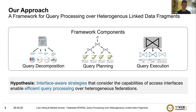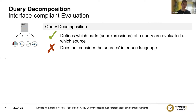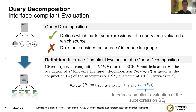Starting with query decomposition: it defines which sub-expressions of a query should be evaluated at which source. Since traditional approaches consider all interfaces to be equal SPARQL endpoints, they do not consider the source's interface language, and some sub-expressions may not be evaluatable at all sources. Therefore, we extend the definition and introduce interface-compliant evaluation of a query decomposition — evaluating all sub-expressions in a way that is compliant with the expressivity of the sources.